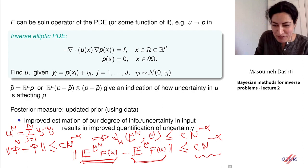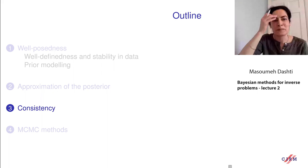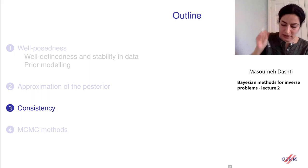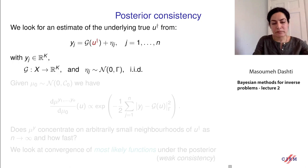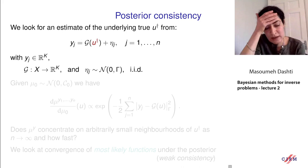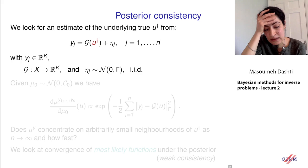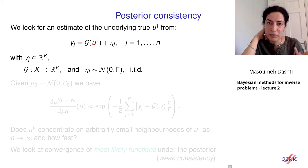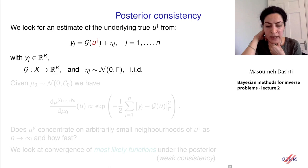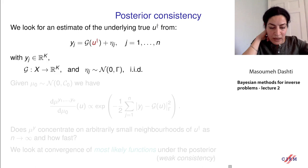I'll move on to the next part: consistency of the posterior. The setting is as follows: we assume there is an underlying truth u-dagger, and the data comes from that underlying truth. My data is the application of the forward operator with some noise, and I have n pieces of data. Each y_j can live in some Euclidean space R^k.